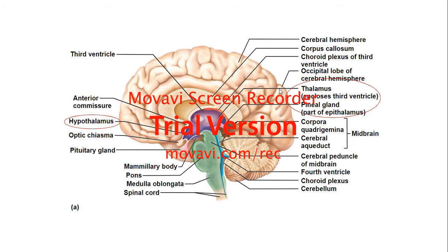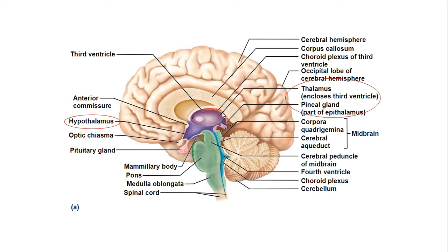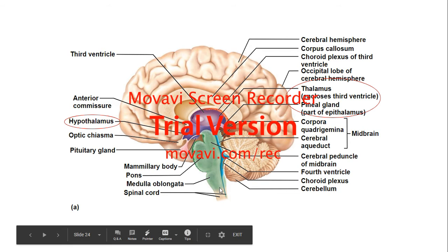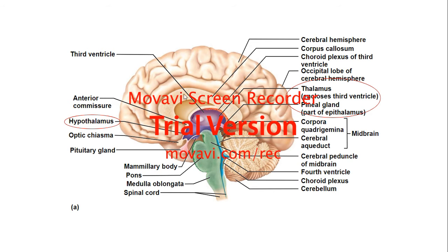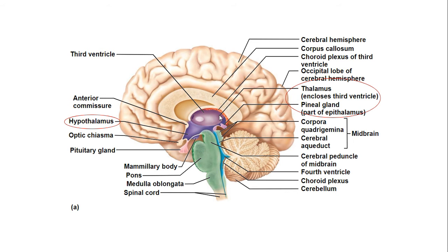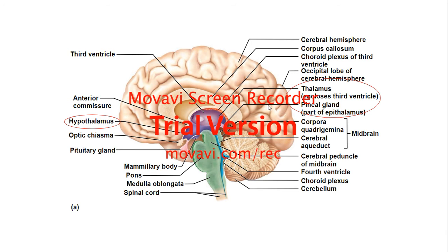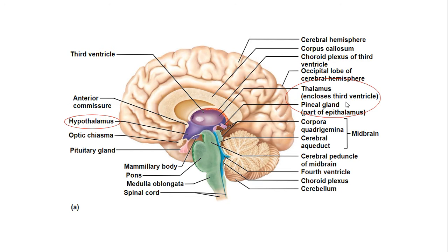Your thalamus is very important — it relays sensory information that comes from the spinal cord, up through the brainstem, to the thalamus, and from the thalamus it's relayed to different parts of the cerebrum. The pineal gland, which is part of the epithalamus, is also circled on this diagram.